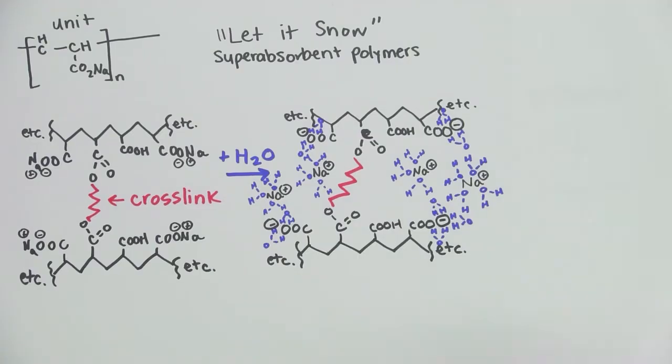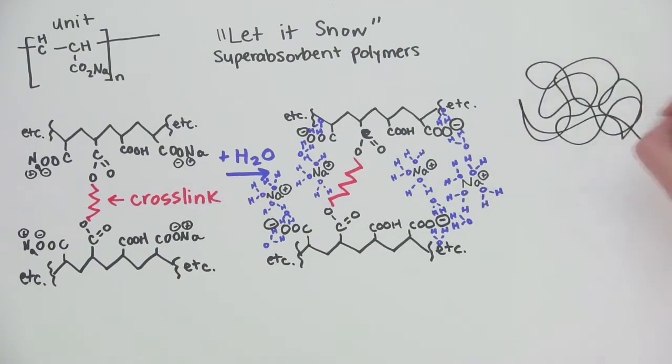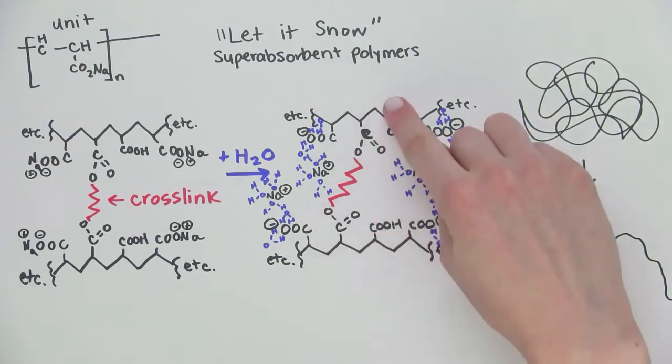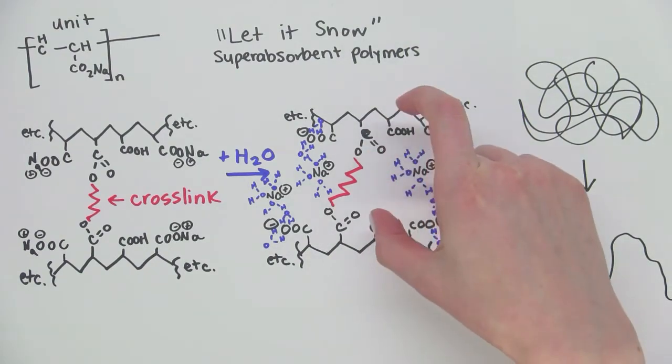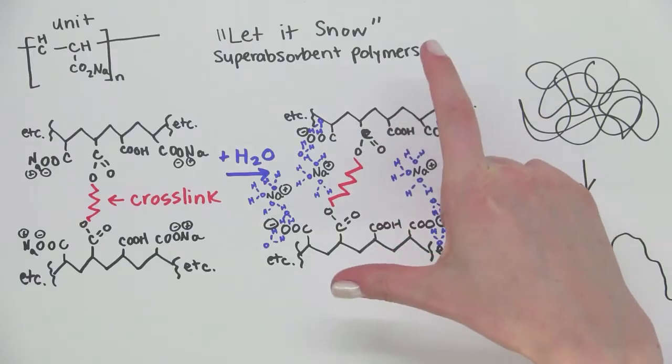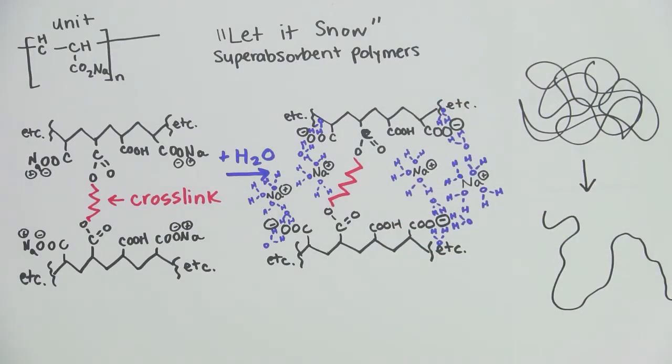And the repulsion causes the polymer, which starts out wound together, to unwind, swell, and stretch. The cross-links, which connect the polymer chains together, prevent them from breaking apart in the water. And the fake snow that's created is the same snow they use in Hollywood movie sets.